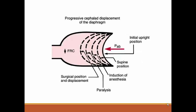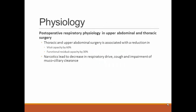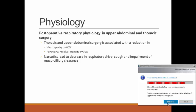Graphically, the effects of supine position, induction of anesthesia, paralysis, and surgical positioning all decrease FRC and predispose to micro-atelectasis and hypoxemia. Studies show thoracic and upper abdominal surgeries reduce vital capacity by 60% and FRC by 30%. Narcotics also lead to decreased respiratory drive, decreased cough, and impairment of mucociliary clearance.